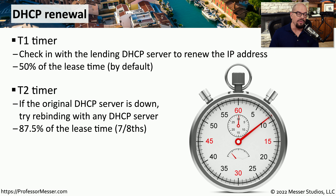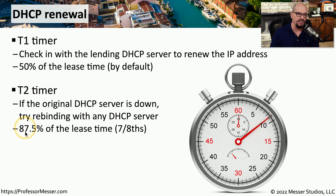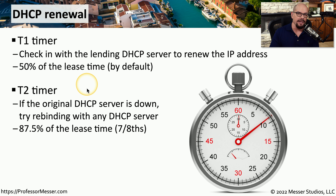There may be times though that a DHCP server is unavailable and you're not able to check in with that T1 timer after four days. If that DHCP server never returns to the network, the lease time continues to count down. Once you get to seven-eighths of that lease time — or 87.5% — it will try rebinding with any other DHCP server you might have on the network so that it can retain that IP address. This is the T2 timer, and it gives every device on the network a chance to keep its IP address by rebinding with a redundant DHCP server.